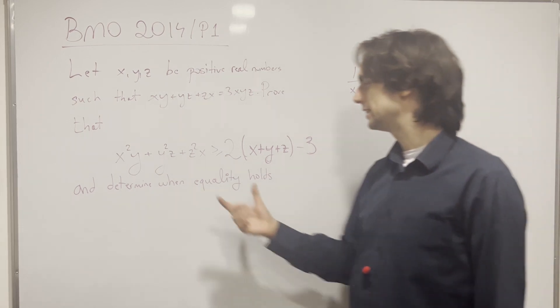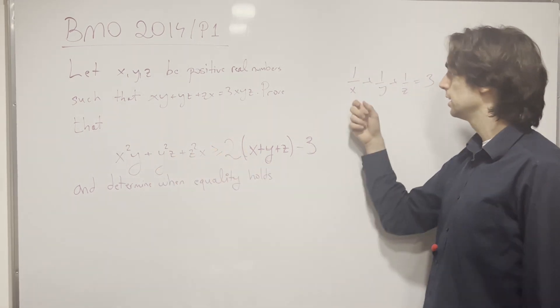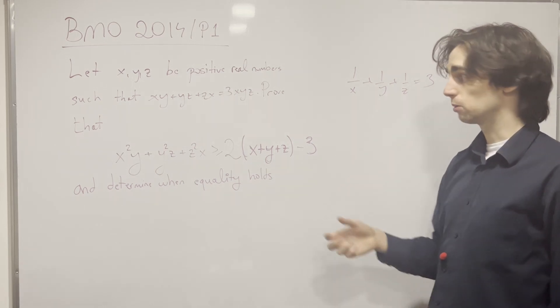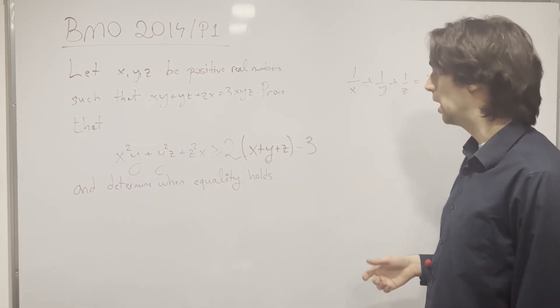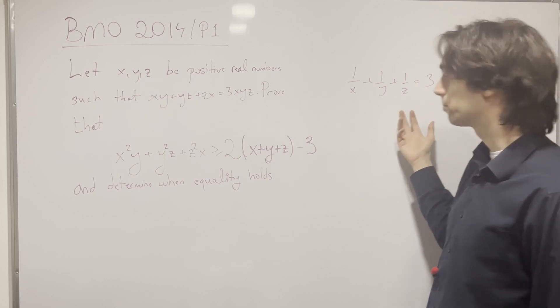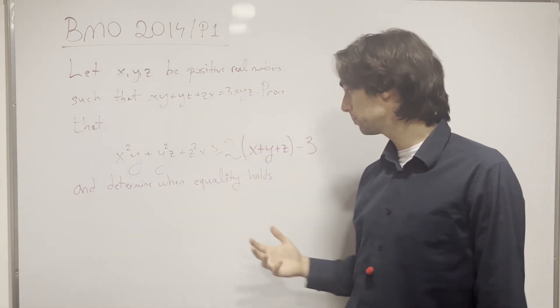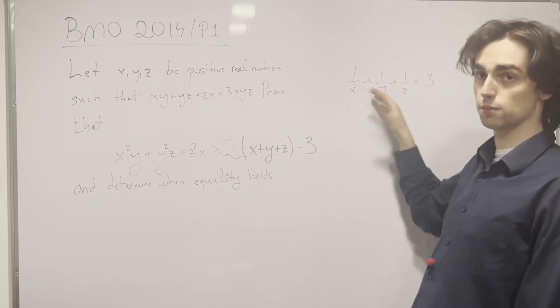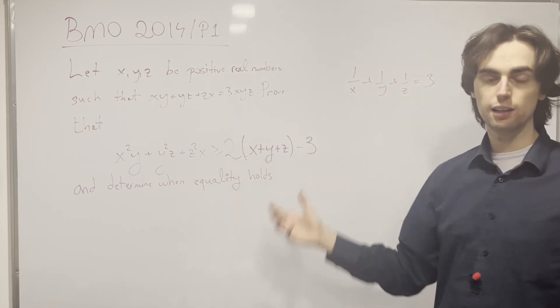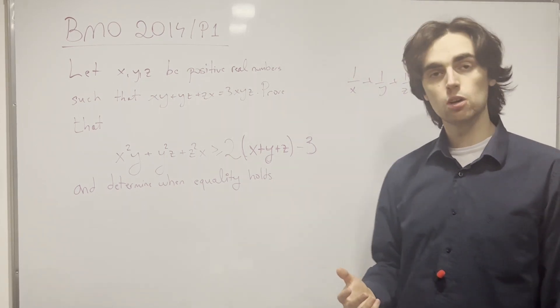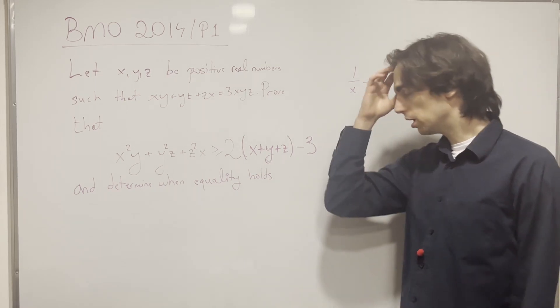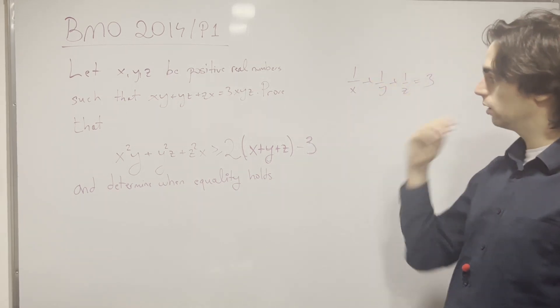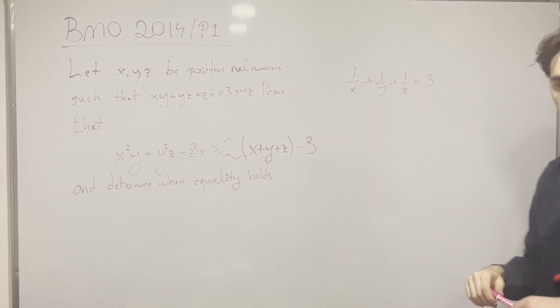instead of multiplying both sides by something big, we can just multiply this side by 1/x plus 1/y plus 1/z to the power of 3. This multiplied by this once, and not touch this 3 at all. And then it would also be homogeneous, it would be of the same power, and then we could figure out what it is we actually need to do.